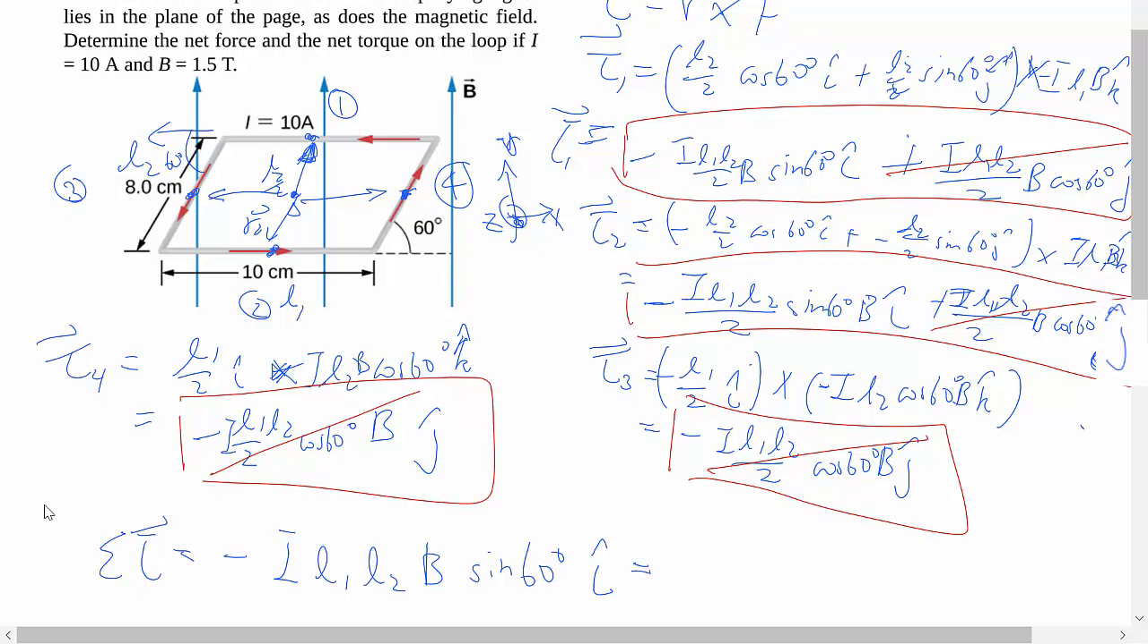And then we can sub in all the numbers, L1 being 10cm, L2 being 8cm, so on and so forth. You end up getting a number like that. Just a number. But I'd like to take it just a little bit further because your textbook does so. And it is quite useful to think about it in that way.